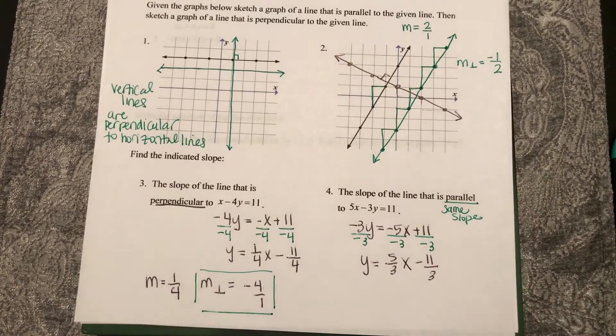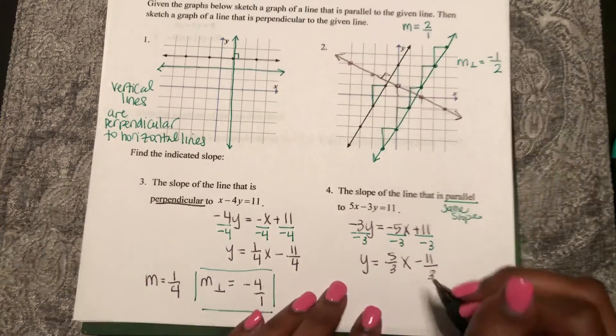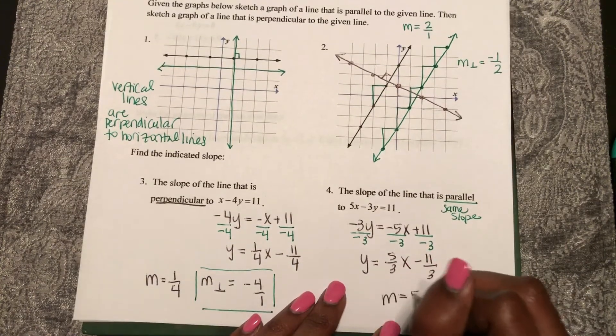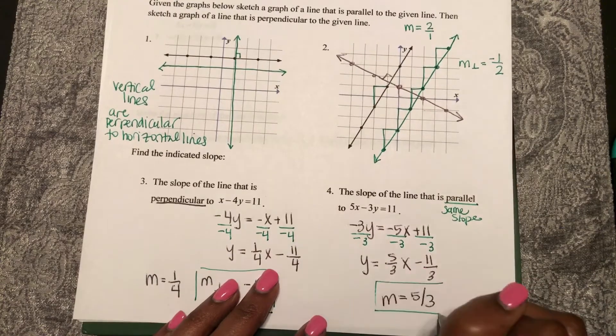So I want my slope to have the same slope as this line, so m equals 5/3.